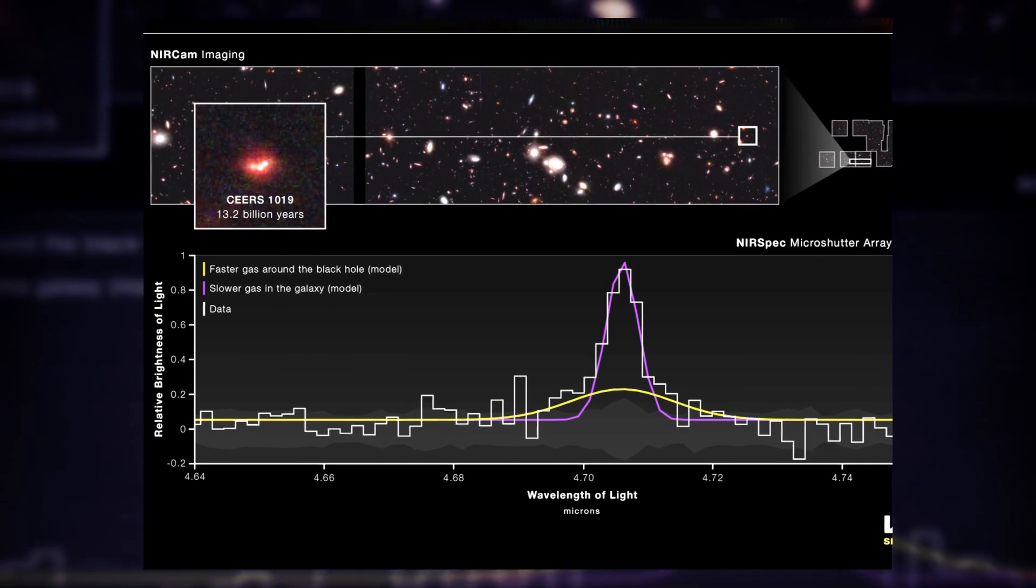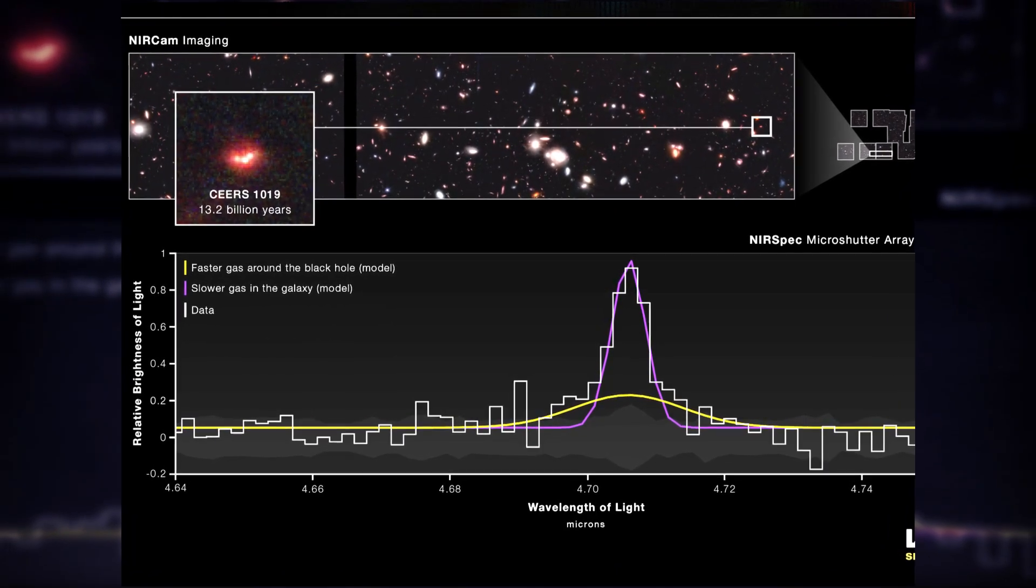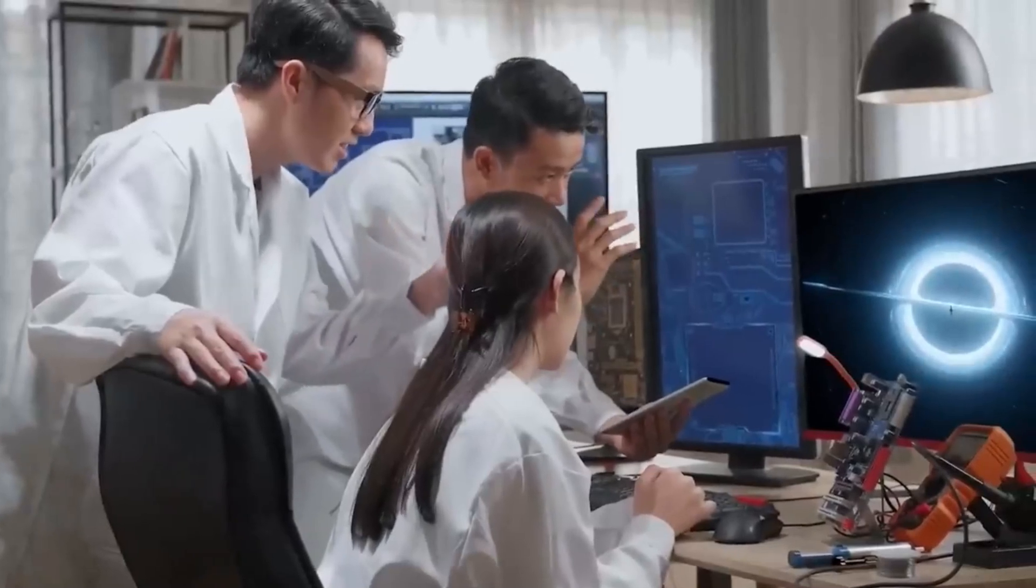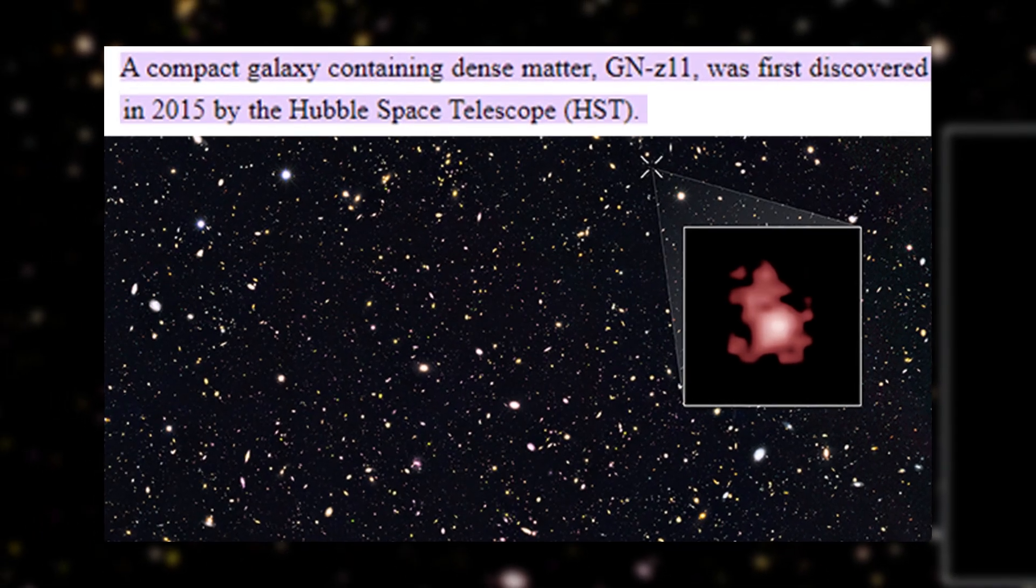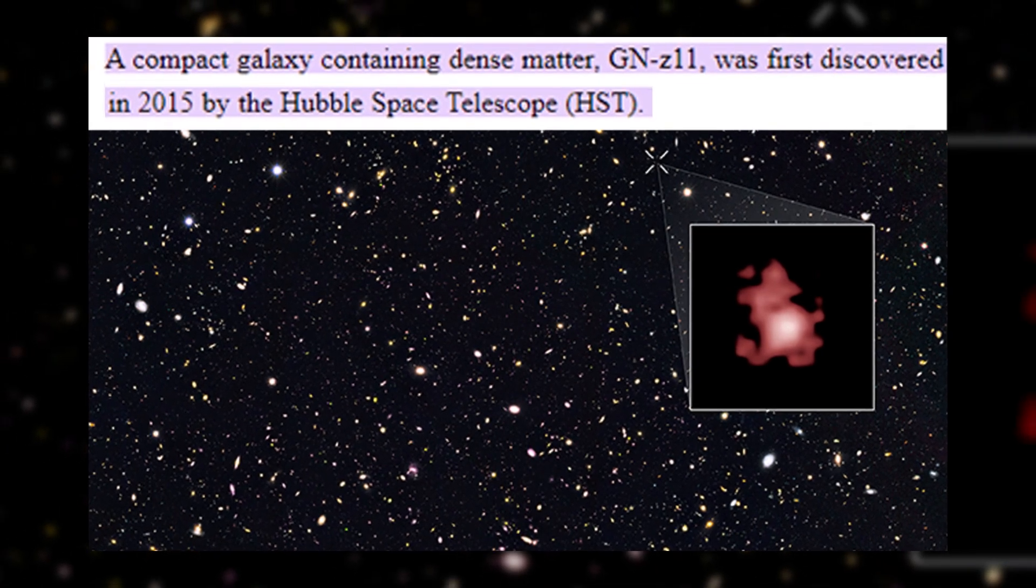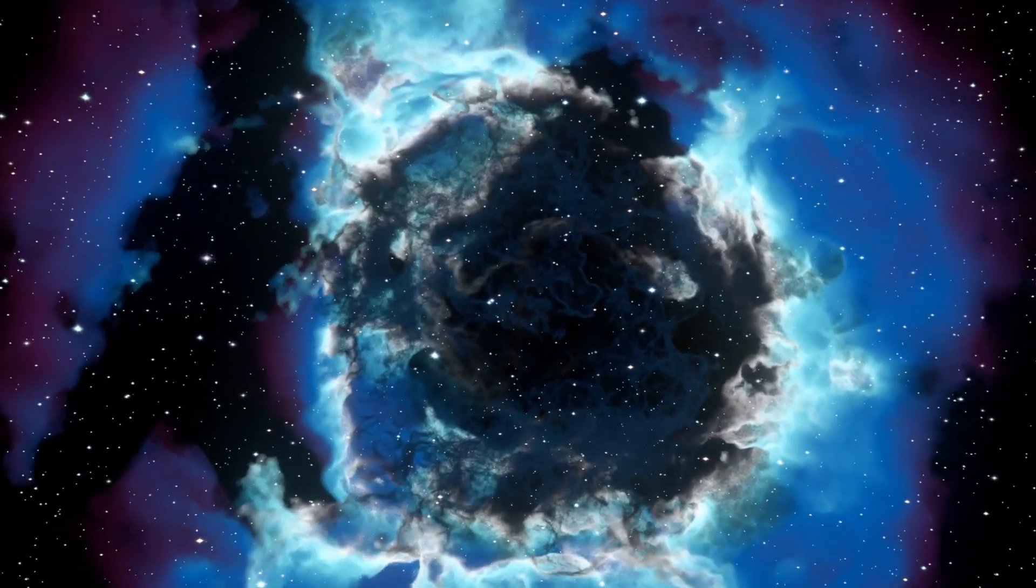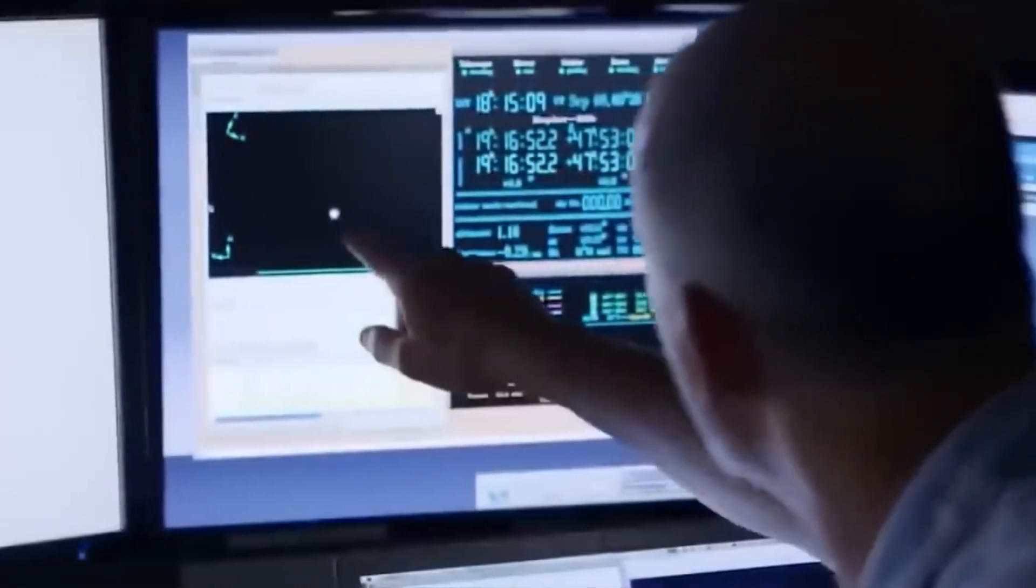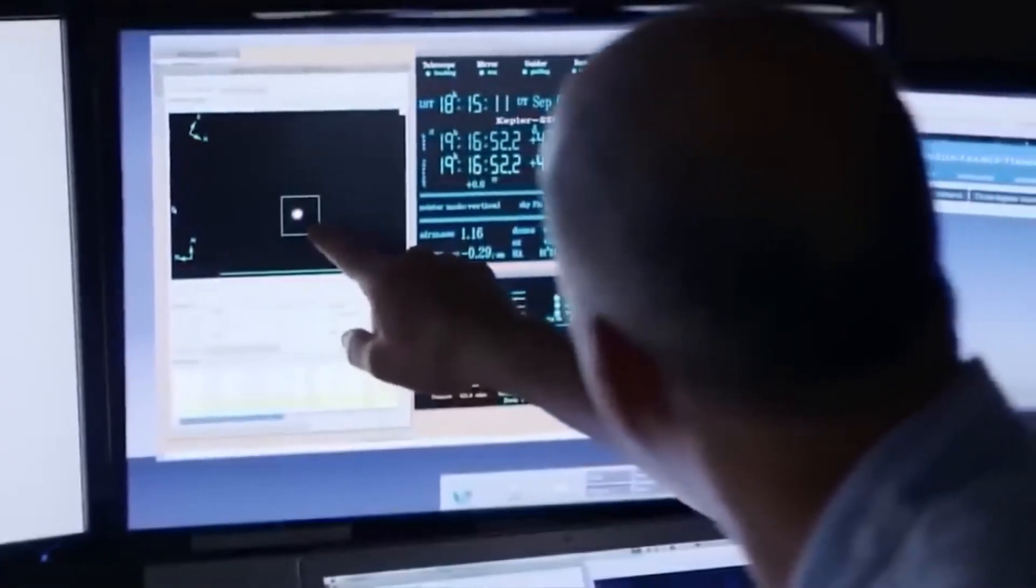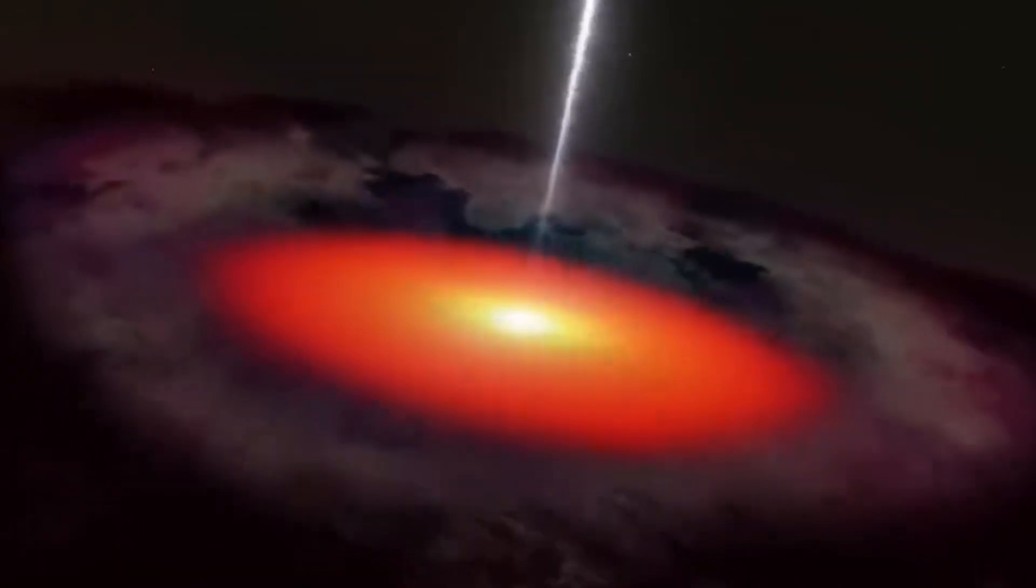CEERS 1019 and a handful of other super early galaxies are excellent targets for this research because they are relatively bright. The galaxy was identified in Hubble data in 2015 and at the time was the earliest most distant galaxy observed. Subsequent observations confirmed its existence, but more detailed information remained elusive.